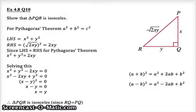This is exercise 4.8, question 10, and it's a proof involving Pythagoras' theorem. In this question, we have to show that triangle PQR is isosceles, and we're given these lengths on the diagram: one side's x, the other one's y, and the hypotenuse is the square root of 2xy.